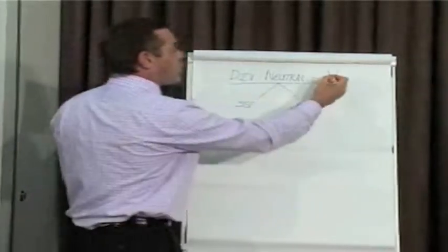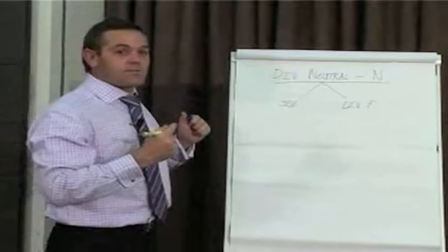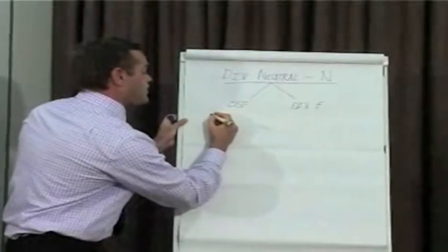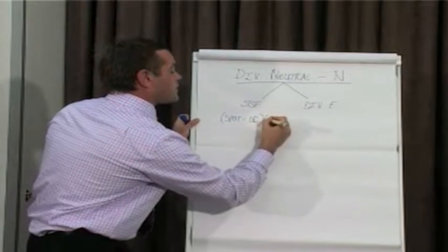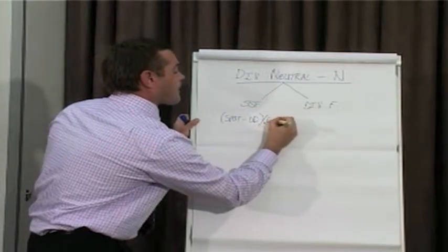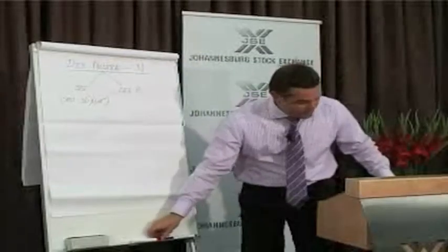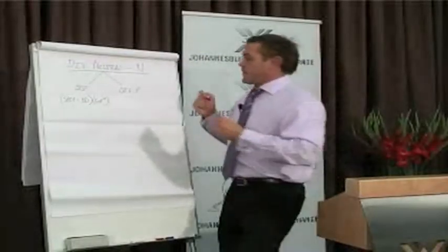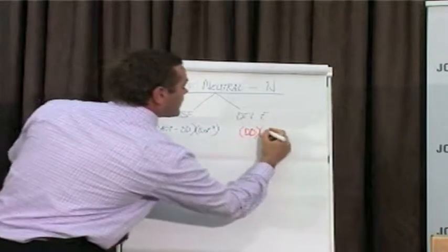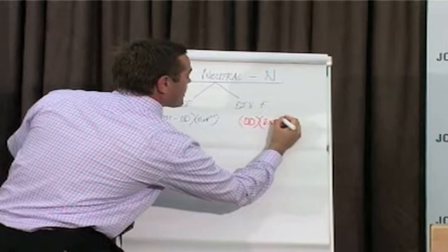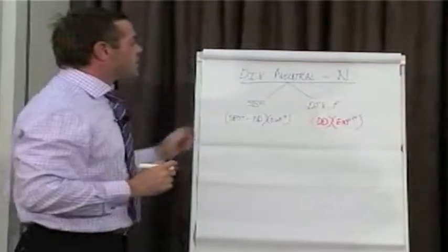If we look at the formula and the value of a dividend neutral contract: the single stock futures calculation is the spot minus the discounted dividend plus the interest. The formula for the dividend future, the F contract, is the discounted dividend plus interest. The N contract should be a combination of both the single stock futures plus the dividend futures.